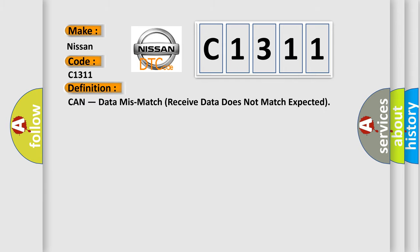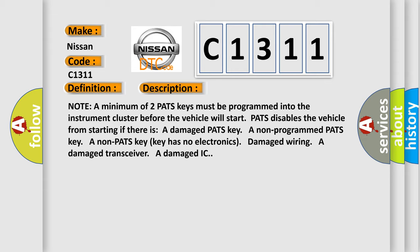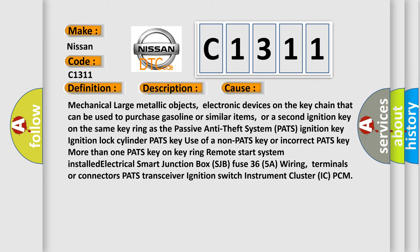The basic definition is: CAN data mismatch — receive data does not match expected. Here is a short description of this DTC code. Note: a minimum of two PATS keys must be programmed into the instrument cluster before the vehicle will start. PATS disables the vehicle from starting if there is a damaged PATS key, a non-programmed PATS key, a non-PATS key, damaged wiring, a damaged transceiver, or a damaged IC.